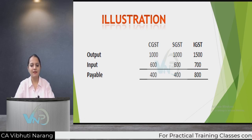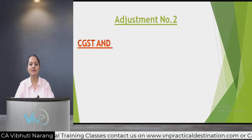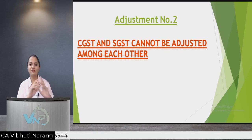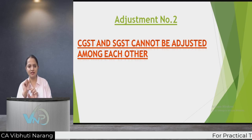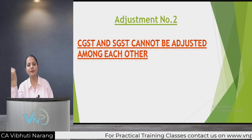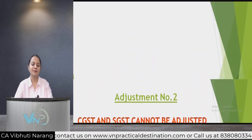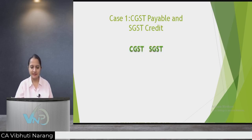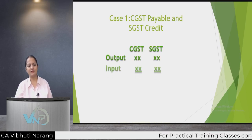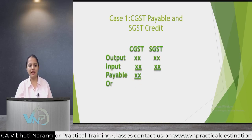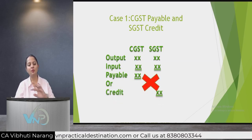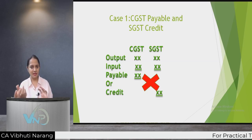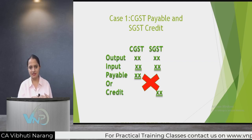Adjustment number two states that CGST and SGST cannot be adjusted among each other. This adjustment has two cases: the first case is CGST payable and SGST credit, and the second case is SGST payable and CGST as credit. In the first case, CGST is payable and SGST is credit — these two cannot be adjusted among each other.